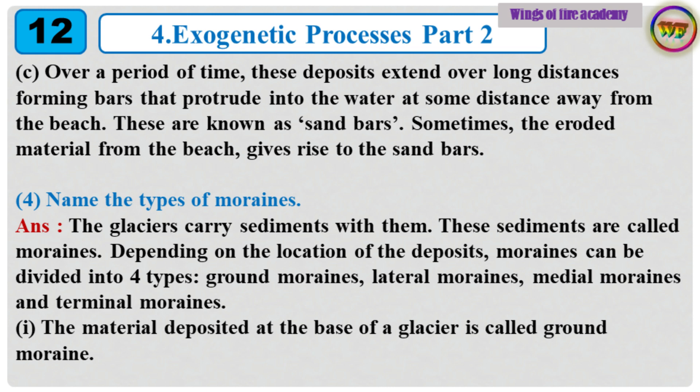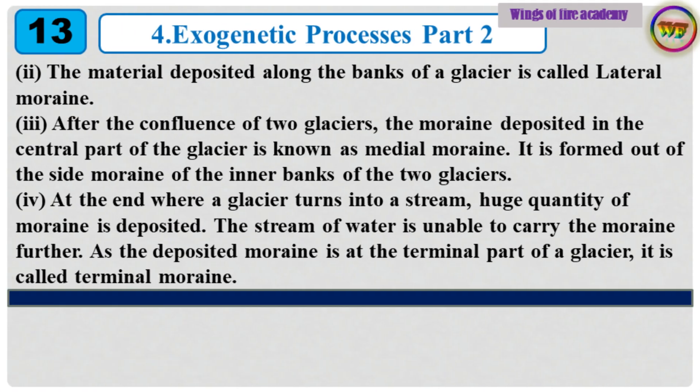4. Name the types of moraines. Answer: The glaciers carry sediments with them. These sediments are called moraines. Depending on the location of the deposits, moraines can be divided into four types: ground moraine, lateral moraine, medial moraine and terminal moraine. 1. The material deposited at the base of a glacier is called ground moraine. 2. The material deposited along the banks of a glacier is called lateral moraine. 3. After the confluence of two glaciers, the moraine deposited in the central part of the glacier is known as medial moraine. It is formed out of the side moraine of the inner banks of the two glaciers. 4. At the end where a glacier turns into a stream, a huge quantity of moraine is deposited. As the deposited moraine is at the terminal part of a glacier, it is called terminal moraine.